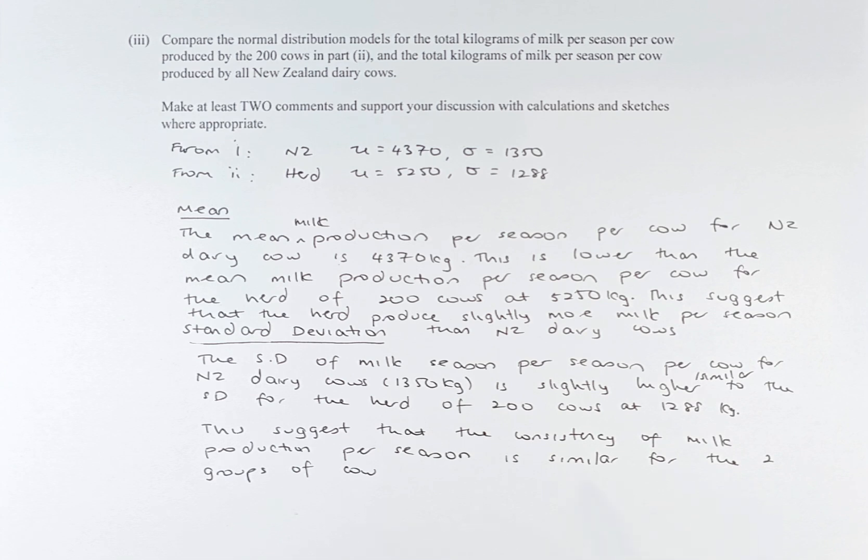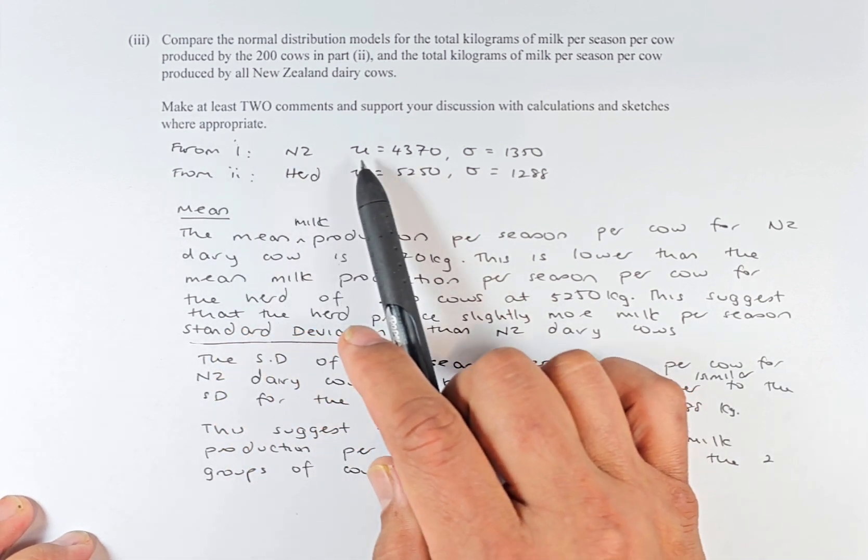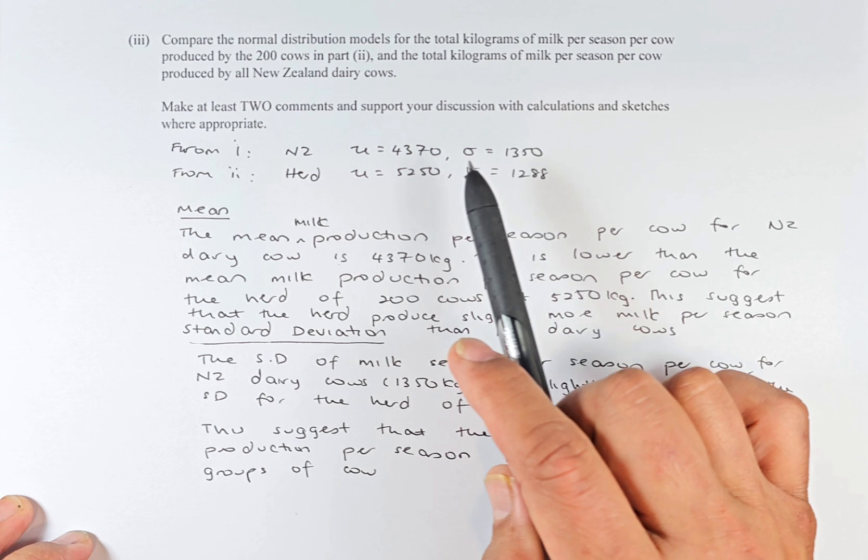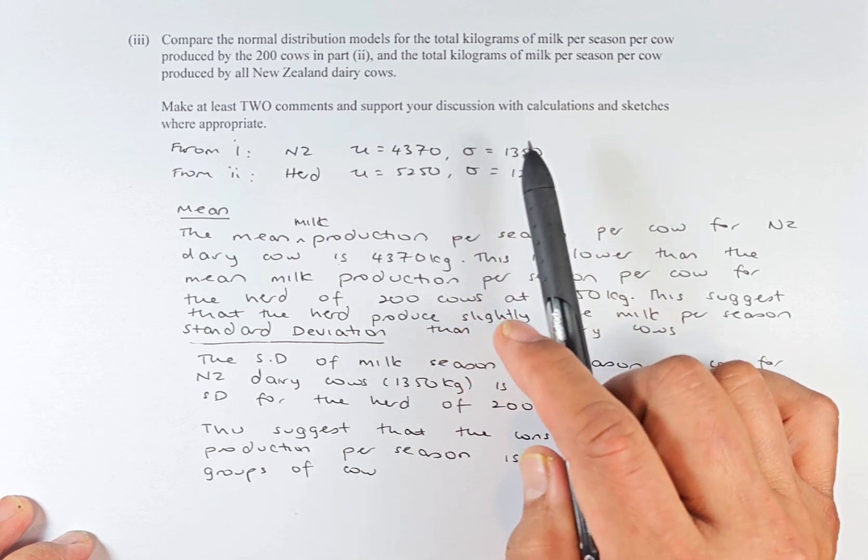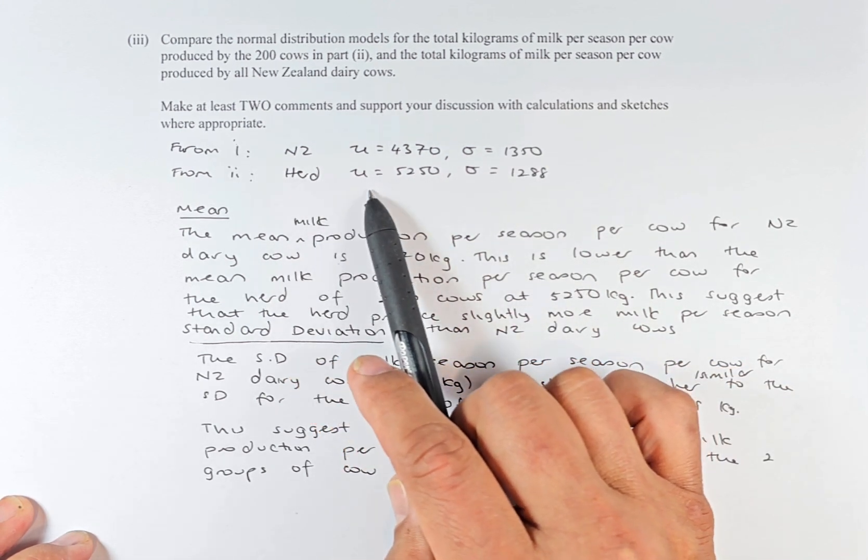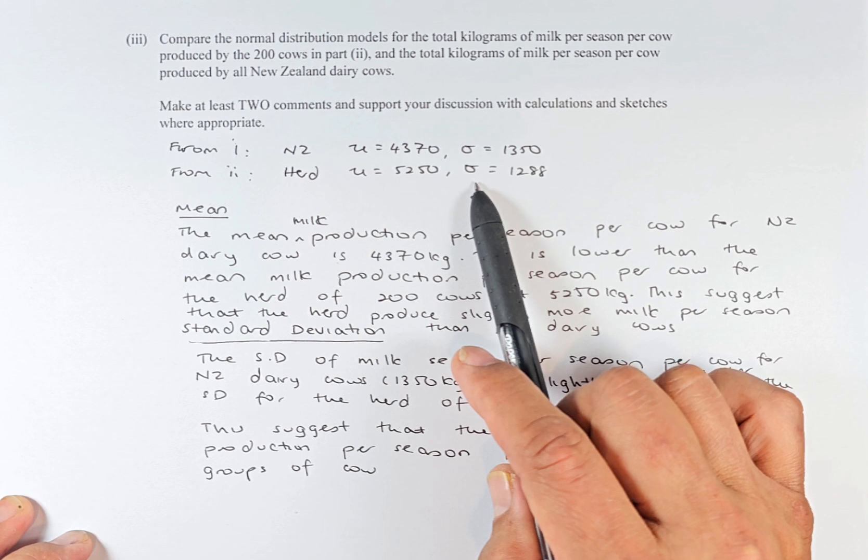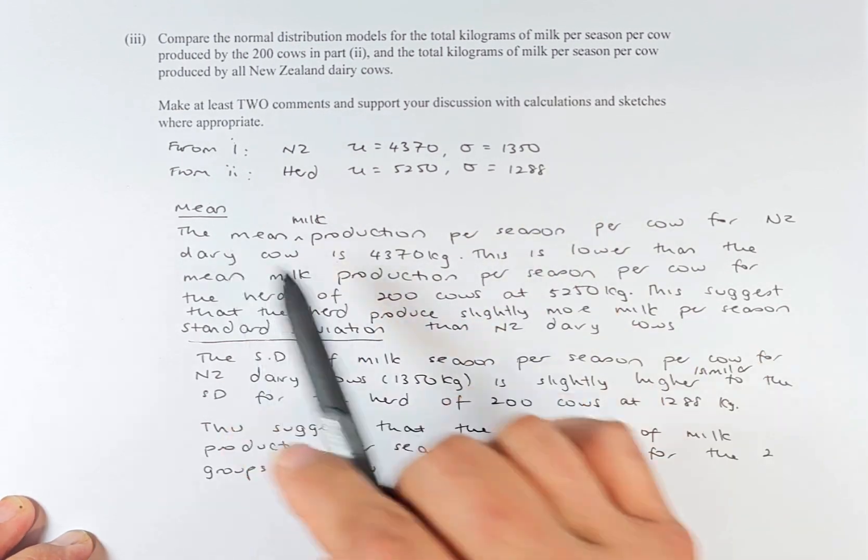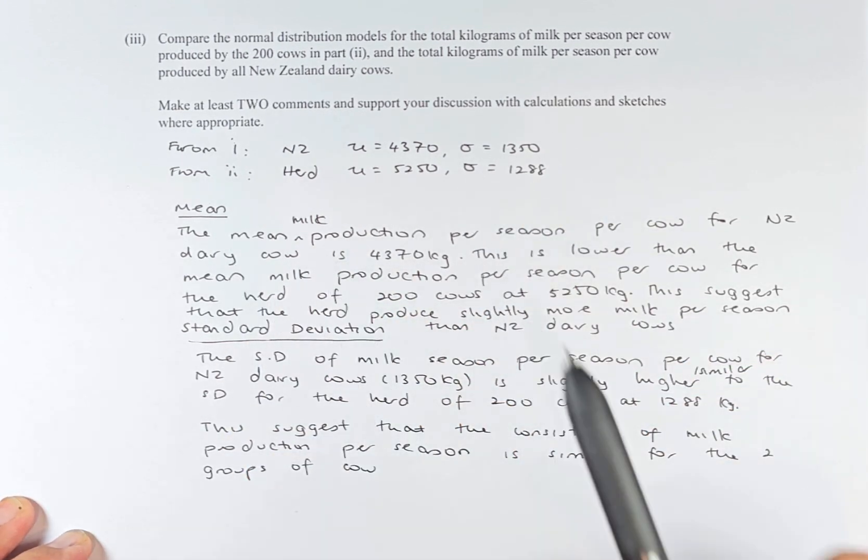To make the story short, we found that from part 1, New Zealand cows mean is 4370, sigma is 1350. For the herd in part 2, the mean is 5250 and sigma is 1288. So we are going to compare these two numbers. We are going to compare the mean and standard deviation and that is what the question is asking.